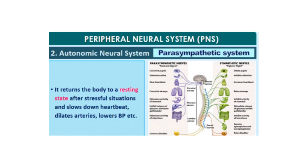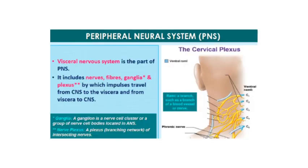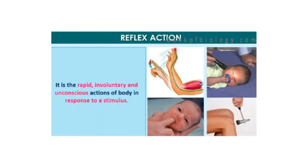The parasympathetic nervous system returns the body to its resting state after a stressful situation — it slows down the heartbeat, dilates the arteries and lowers blood pressure. The visceral nervous system is also a part of the peripheral nervous system. It includes nerves, fibres, ganglia and plexus, by which impulses travel from the CNS to the viscera and back. A ganglion is a cluster of nerve cell bodies that group together to form the ganglion. A nerve plexus is basically a branching network of intersecting nerves.